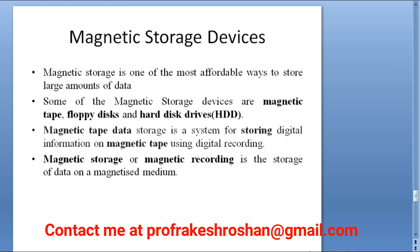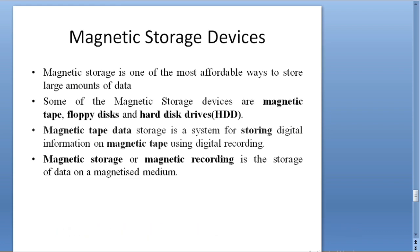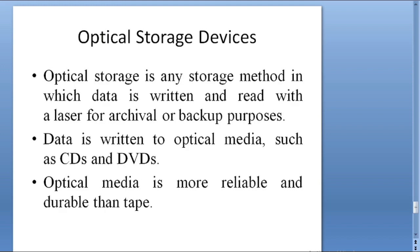In the current scenario we are using the hard disk drive. Magnetic tape data storage is a system for storing digital information on magnetic tape using digital recording. In early times, magnetic tapes were used for storing digital information. Magnetic storage or magnetic recording is the storage of data on a magnetized medium — meaning data can only be stored on a medium that is magnetized.